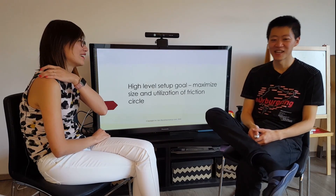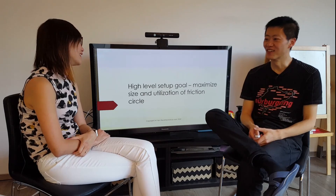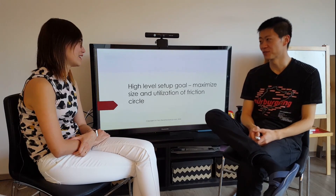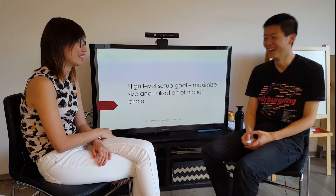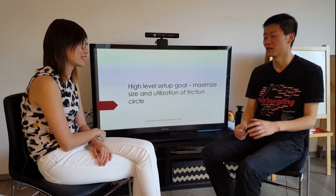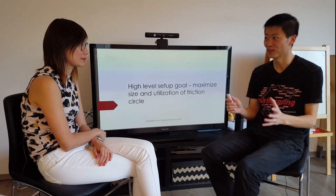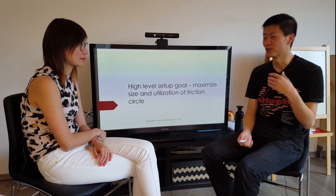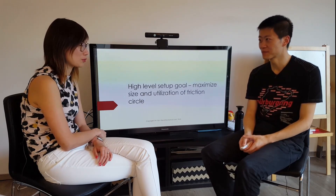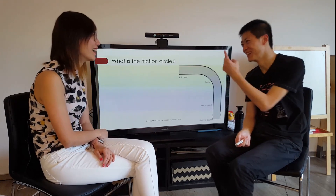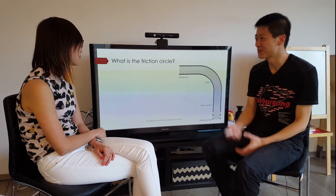Course number one, chapter number one. This chapter is about the high-level goals of racetrack setup. At a high level, what you want to do with racetrack setup is to maximize a thing called the grip circle or friction circle, and to give the driver the confidence to fully use this grip circle. In my day job I create control software for active suspension systems, and with this channel I aim to demystify racetrack setup, whether that's for sim racing or any other form of motorsport.